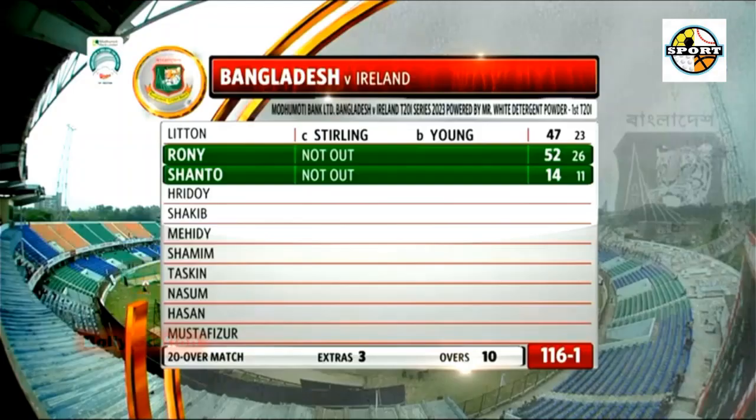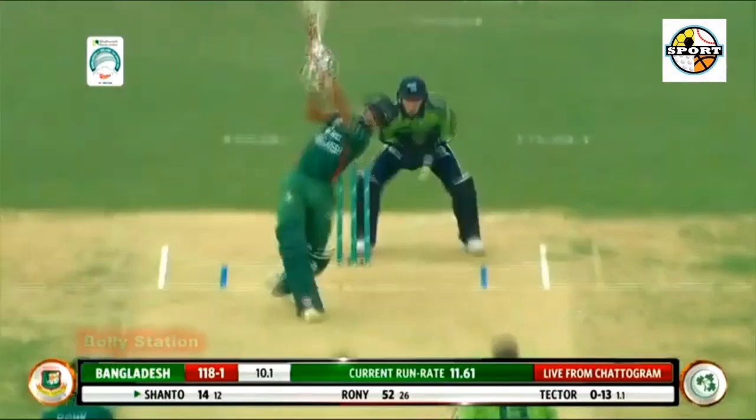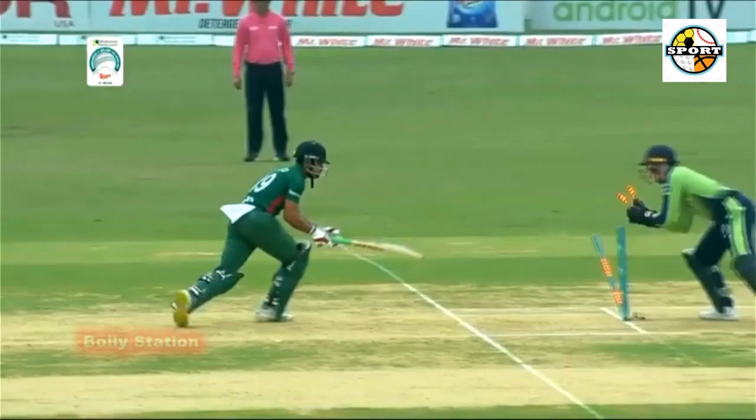Daskan Mahmoud to Tector — out, caught by Mehdi Hassan Miraz. Slower delivery onto middle, flicked behind square where the man from the boundary ropes ran in to complete a superb low catch.